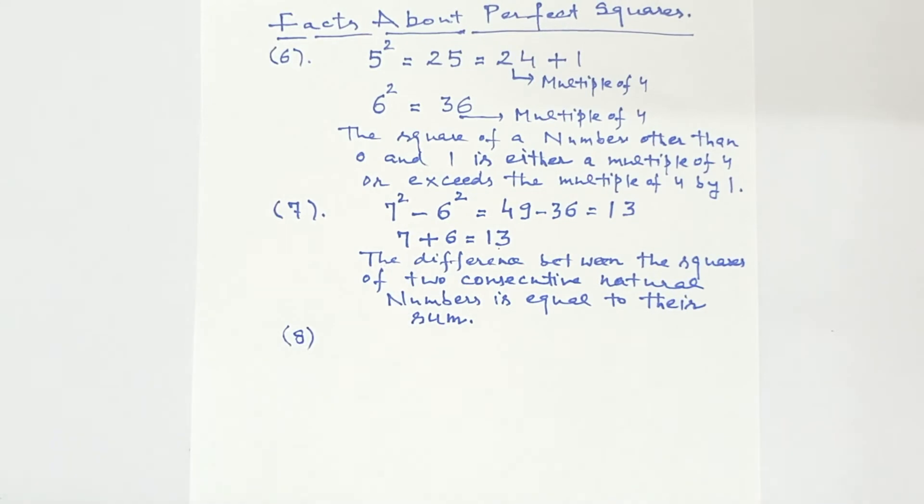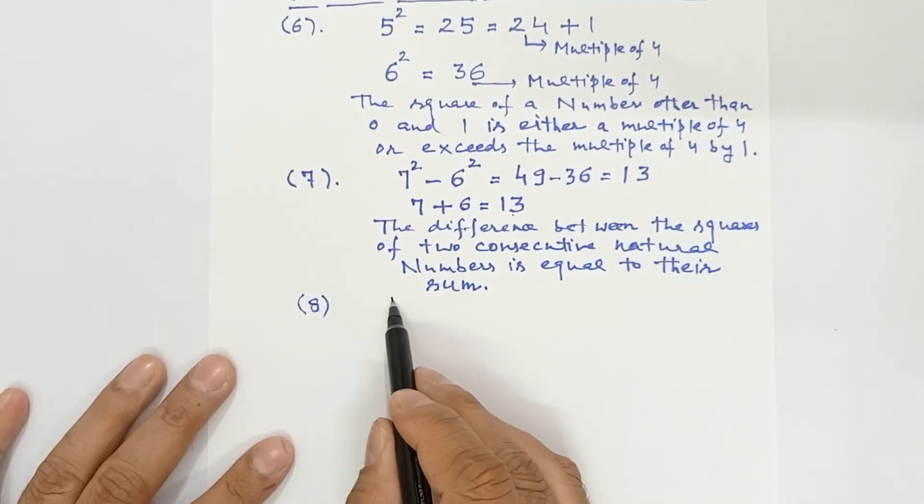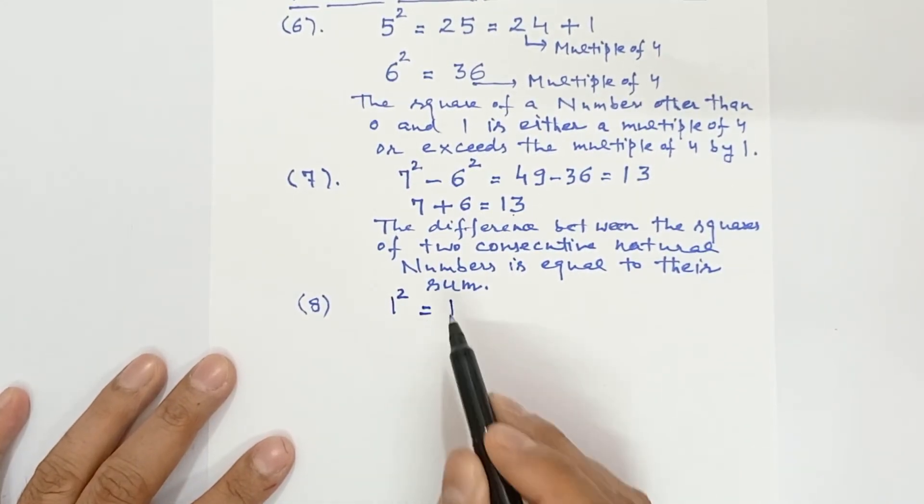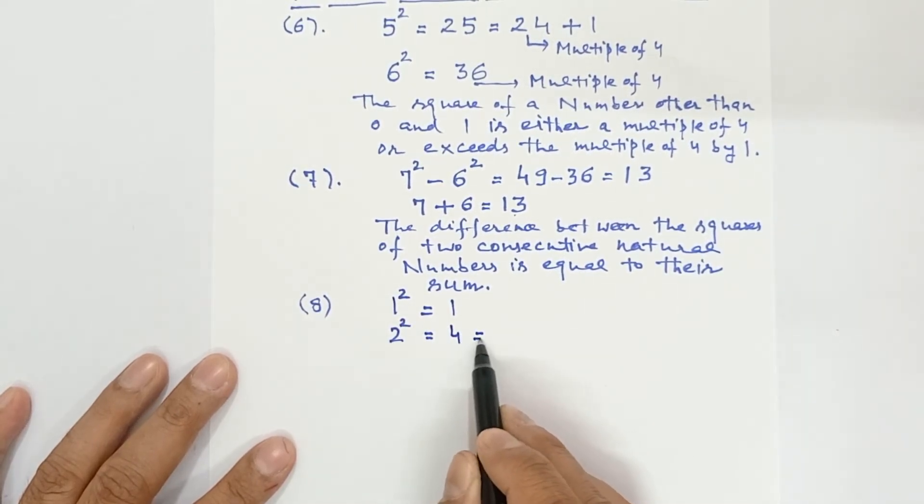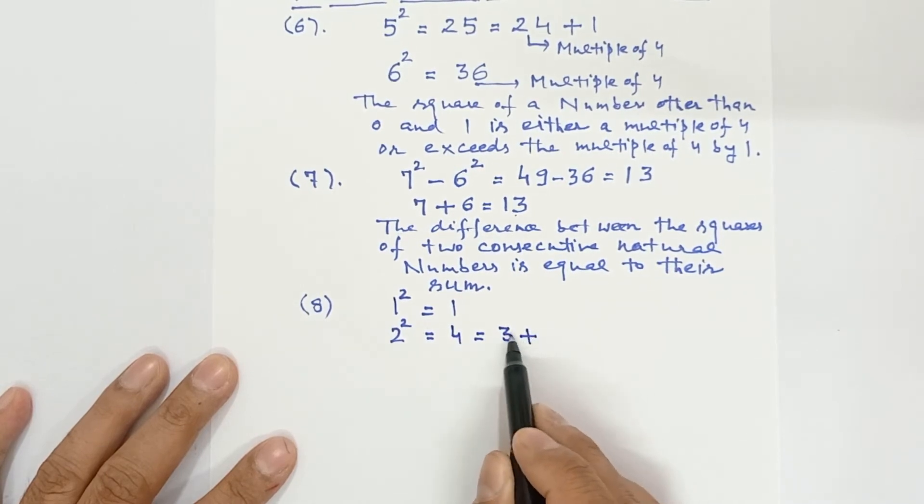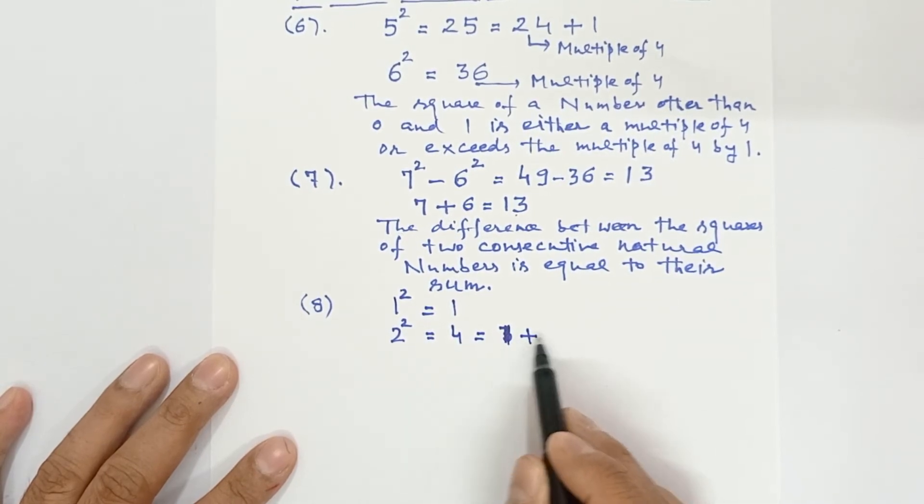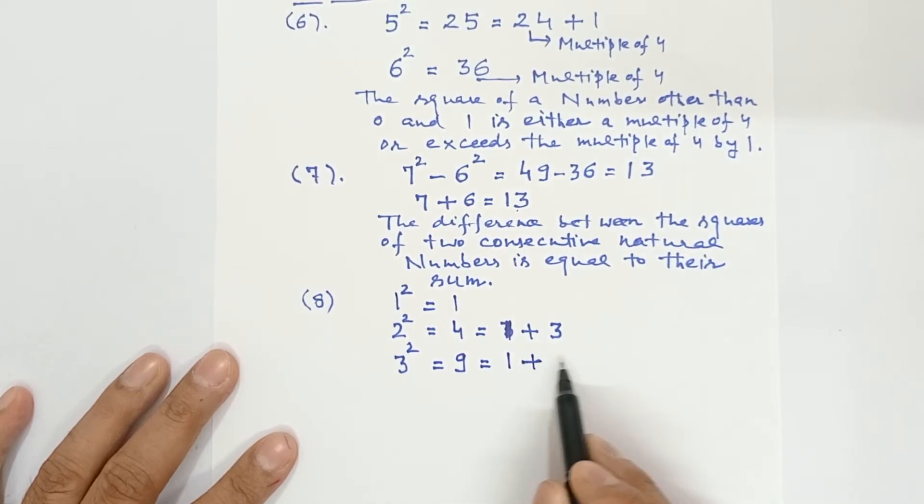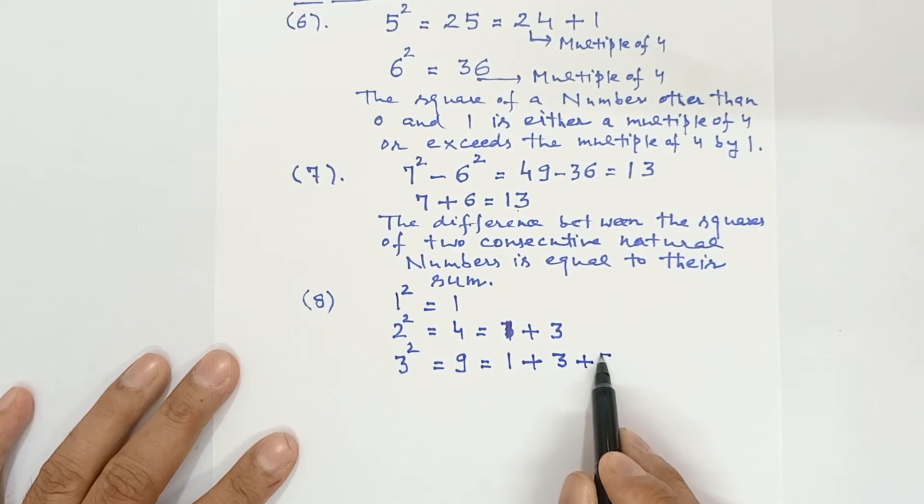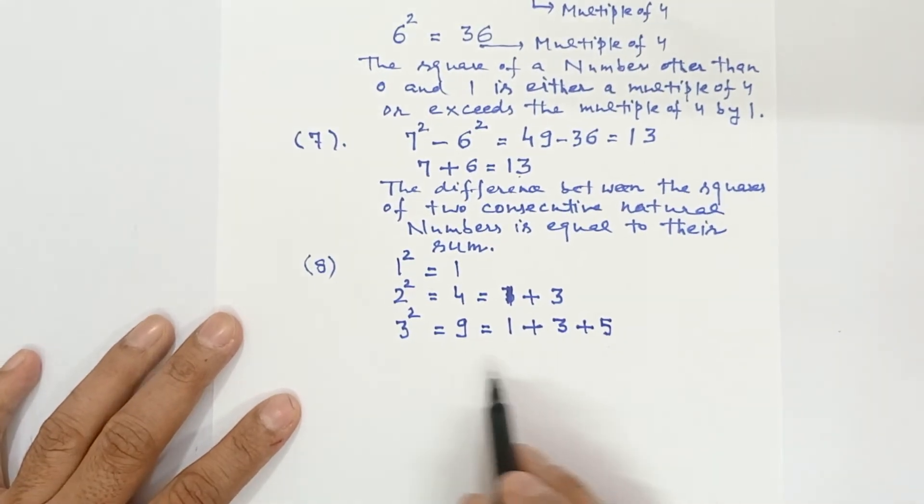Now I am taking eighth fact. The square of natural number is equal to sum of first n odd natural numbers. Suppose I have taken 1. So 1 square is what? 1. So 2 square, if I take 2 square is 4. Can I say 4 is 3 plus 1 or 1 plus 3? I can write 1 plus 3. Then I take 3 square. 3 square is equal to 9. The first odd number is 1, second odd number is 3, and third odd number is 5. So 1 plus 3 plus 5 is 9.